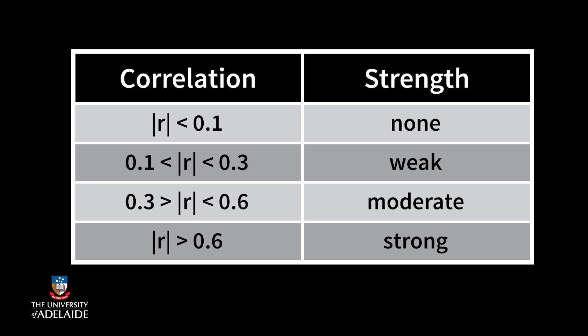There's no strict definition of the boundaries between weak, moderate, and strong relationships, but roughly, we generally think of the correlations with magnitudes between 0.1 and 0.3 as being weak, between 0.3 and 0.6 as being moderate, and greater than 0.6 as being strong.